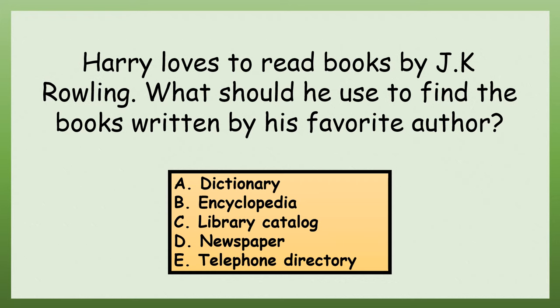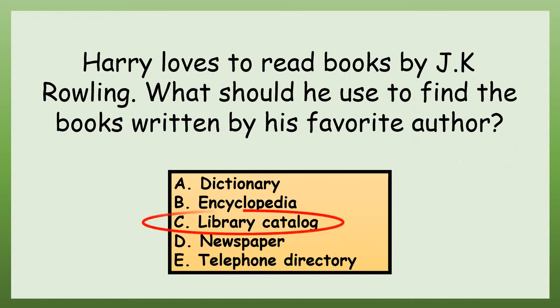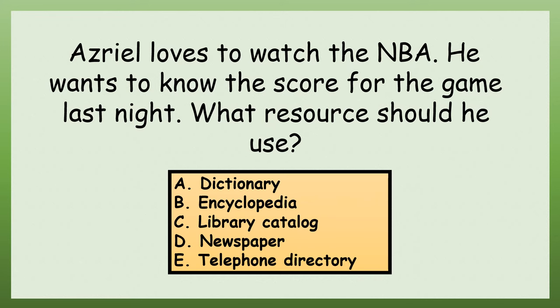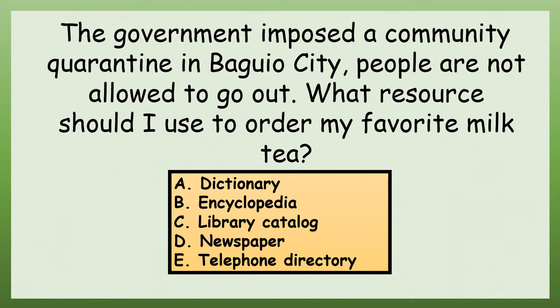Harry loves to read books by J.K. Rowling. What should he use to find the books written by his favorite author? Library Catalog. Israel loves to watch the NBA. He wants to know the score for the game last night. What resource should he use? Newspaper. The government imposed a community quarantine in Baguio City. People are not allowed to go out. What resource should I use to order my favorite milk tea? Telephone Directory.